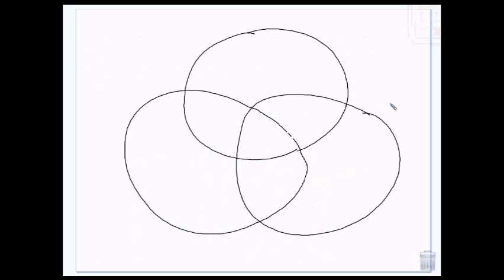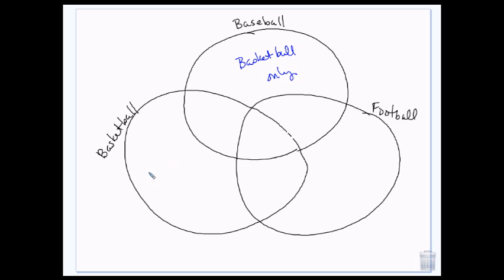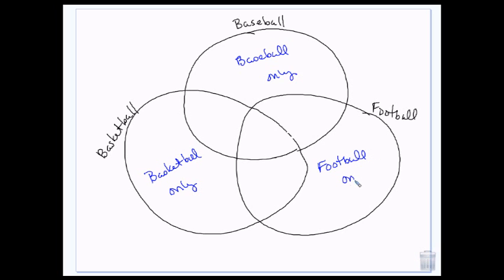We can even have three overlapping circles. This circle is people that play baseball, this circle is people that play basketball, and this circle is people that play football. Up here this would be basketball only, that's baseball only, and this is football only. These people in here do baseball and basketball, these people do baseball and football, and here these people do basketball and football.